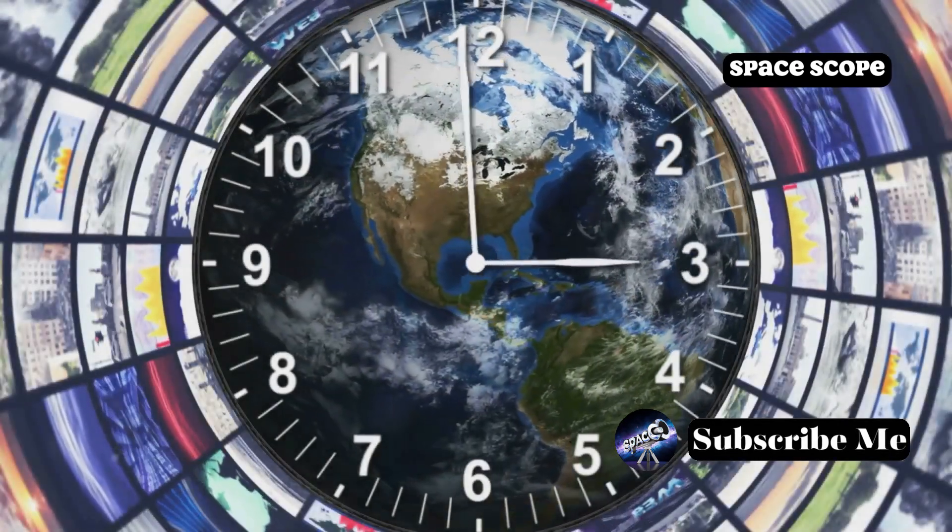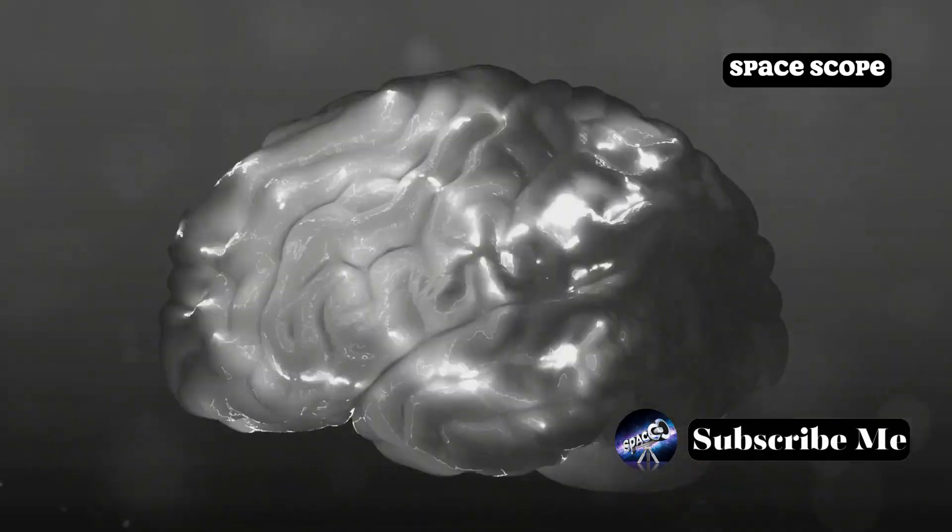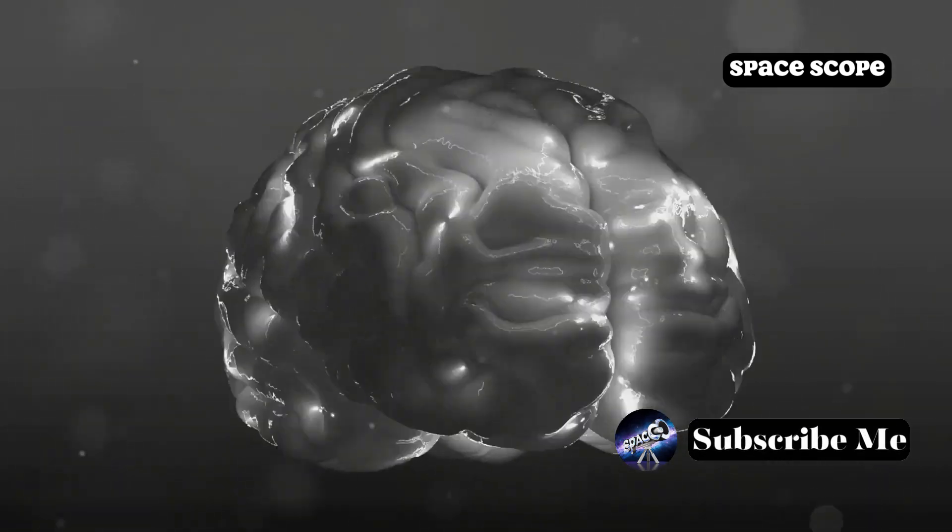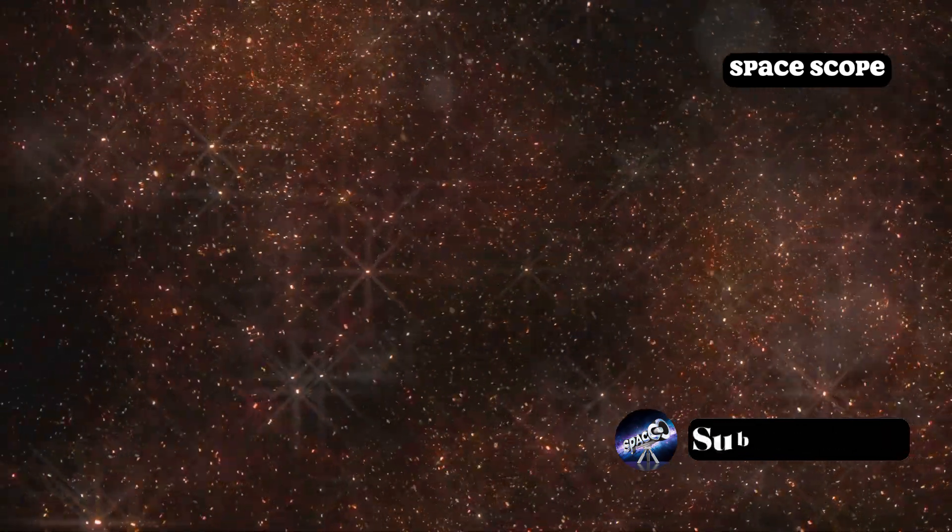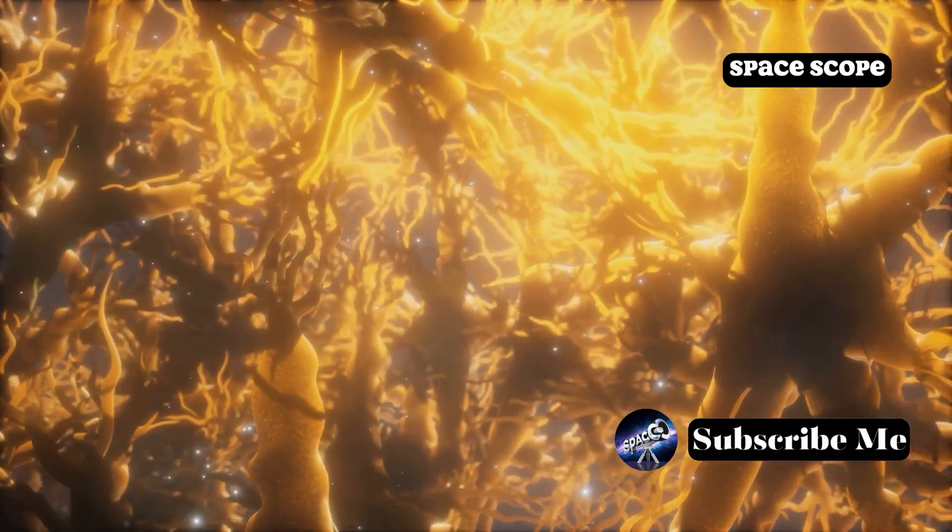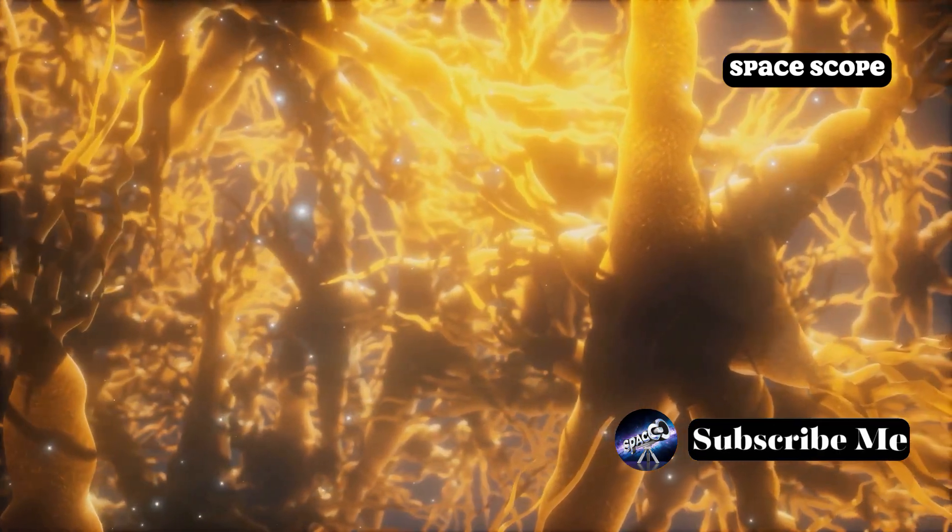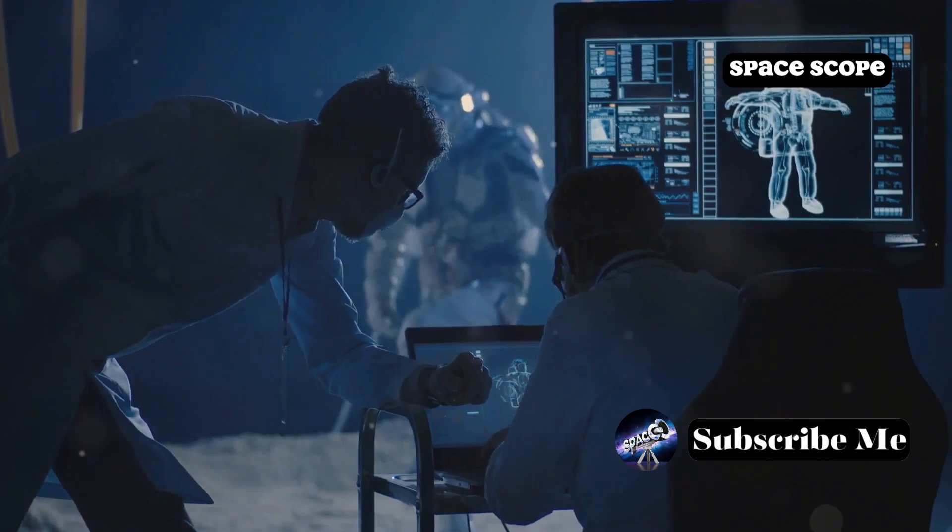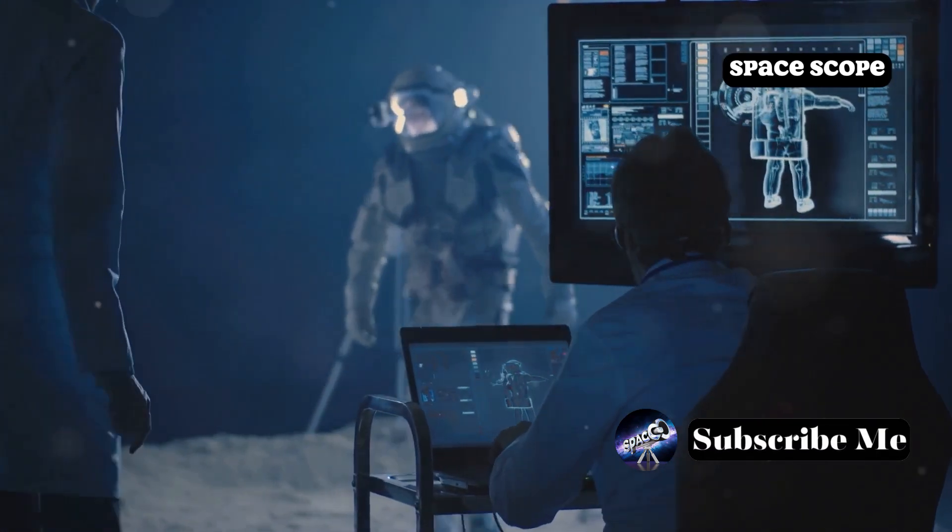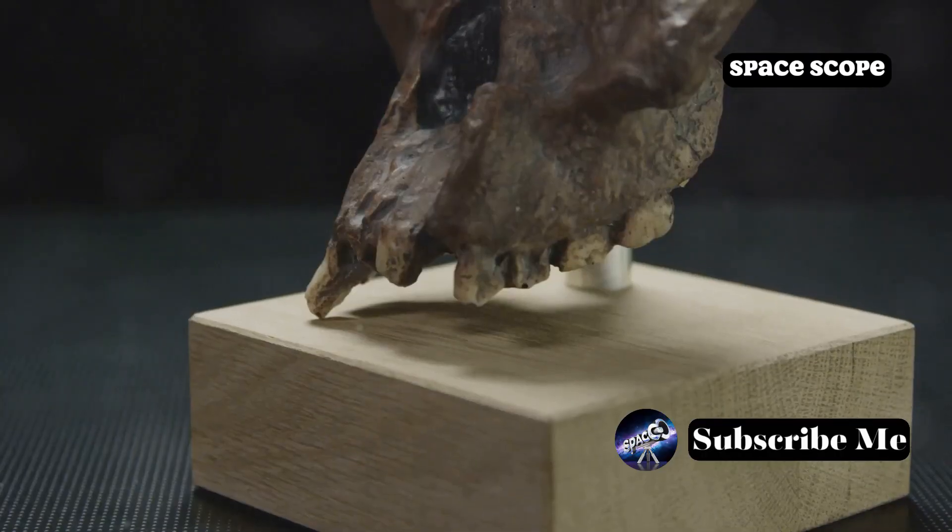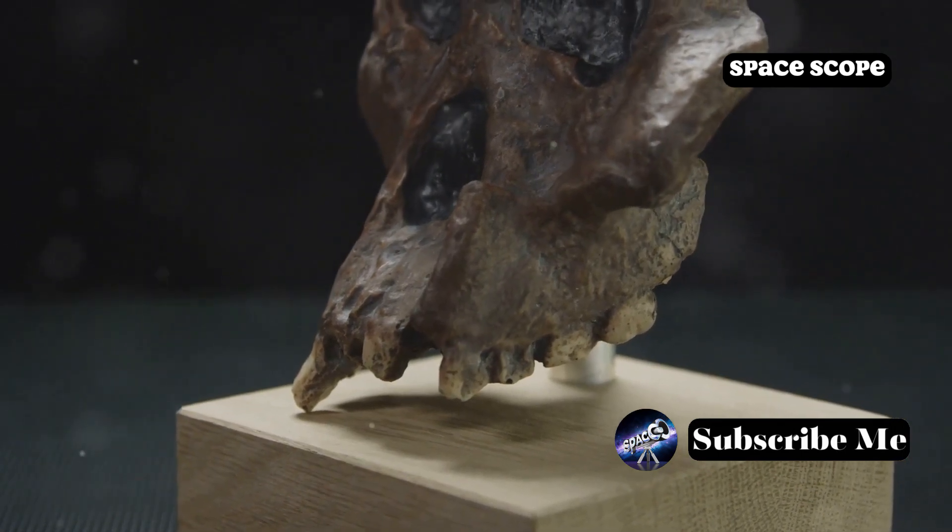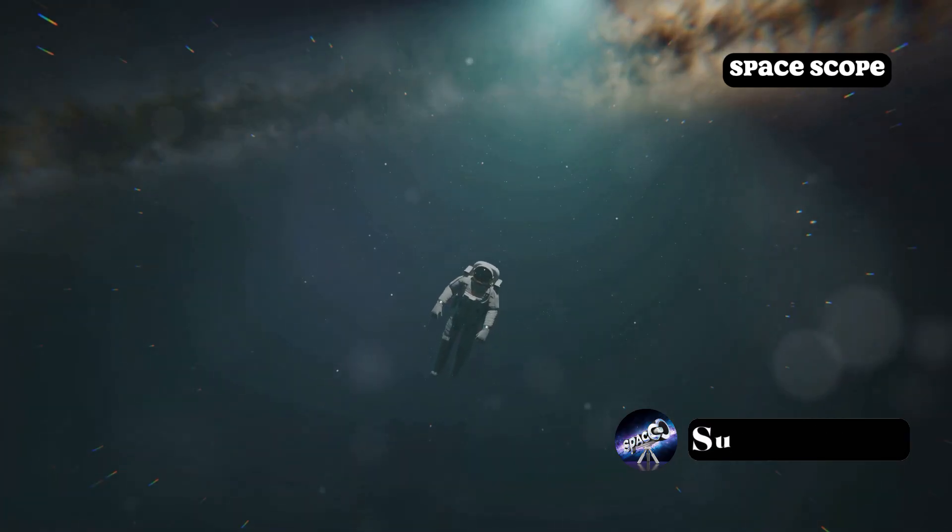The Future of Perception. The human brain is an extraordinary organ, constantly adapting and evolving to make sense of the world around us. If we were to evolve the ability to see space-time, our brains would undergo a profound transformation. New neural pathways would form, dedicated to processing this new type of sensory information. Our cognitive abilities would expand, allowing us to comprehend complex concepts and solve problems in ways we can only imagine today. This evolutionary leap would not happen overnight, but over generations as our brains adapt to this new reality.